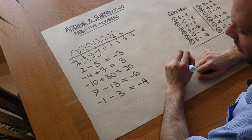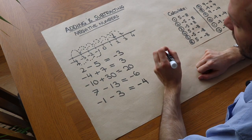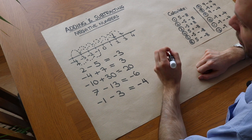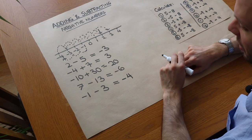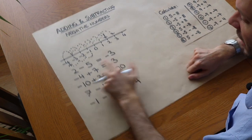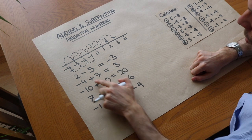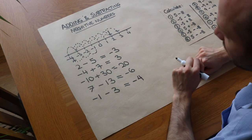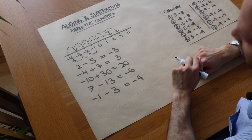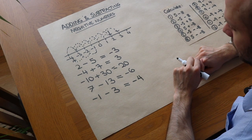Where it becomes more interesting is when we add a negative number or subtract a negative number, because in each case we're either subtracting a positive number or adding a positive number. So what happens if you add a negative number, or subtract a negative number?